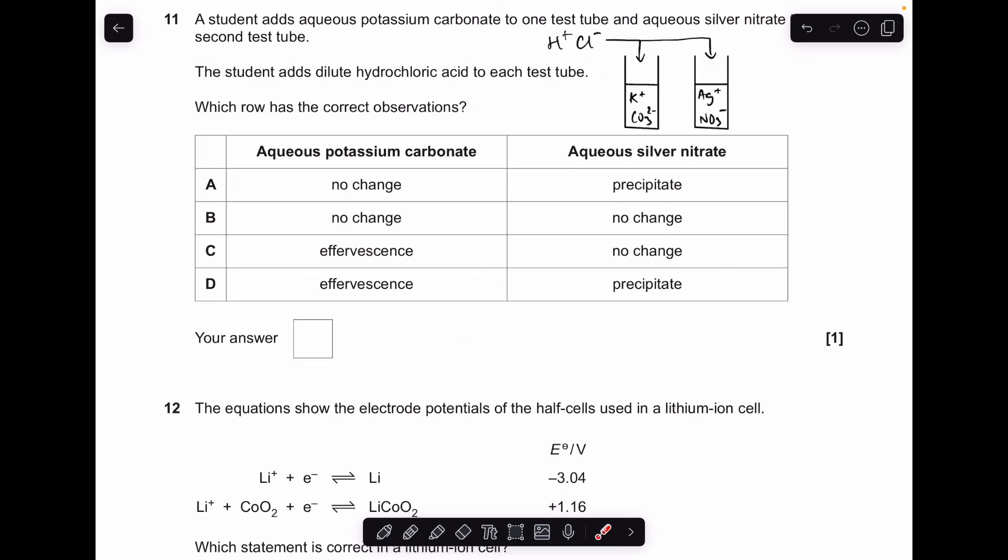Moving on to number 11. So we've got these two test tubes. First one's got potassium carbonate in. So we've got these ions here. Other test tube's got silver nitrate solution in. So we've got those ions there. So they've added dilute hydrochloric acid to each test tube. So effectively, they're putting H plus ions in and Cl minus ions. So we just got to think about what's going to react with what. So in the first test tube, the H plus ions are going to react with the carbonate ions. So we're going to see carbonate ions form carbon dioxide. So you're going to see fizzing, you're going to see effervescence. So that means that C and D are possible answers. A and B are out now. Second test tube, the chloride ions are going to react with the silver ions and form a white precipitate. So D is the answer.